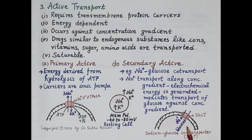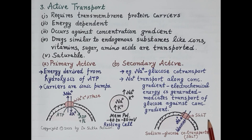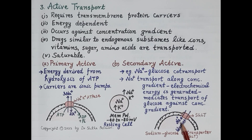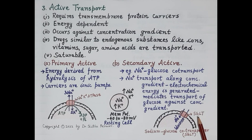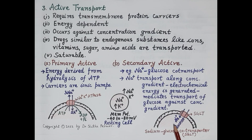Now looking at secondary active transport: this diagram shows the transportation of sodium and glucose, mediated by the sodium-glucose co-transporter — SGLT. It is important to understand that sodium is transported along its concentration gradient, whereas glucose is transported against the concentration gradient. When sodium is transported along the concentration gradient, energy is derived by the cell, and that energy is utilized for transporting glucose against the concentration gradient. The sodium-glucose co-transporter transports sodium from the extracellular fluid to the intracellular fluid, along the concentration gradient.